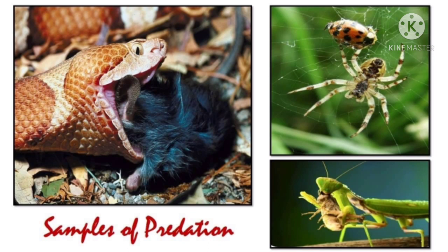The organisms involved in predation interaction are the predator and the prey. Sino ang lubhang naaapektuhan sa predation interaction? The prey. Ang prey ang higit na naaapektuhan kasi sila yung kinakain ng mga predator.